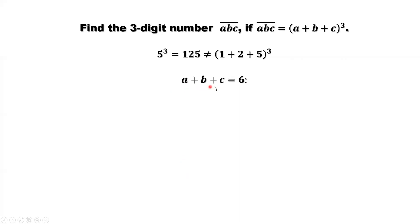If A plus B plus C equals 6, then 6 to the power 3 is 216. The digits sum to 2 plus 1 plus 6, which is 9, and 9 to the power 3 is not same as 6 to the power 3. This implies 216 is not the answer.